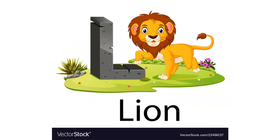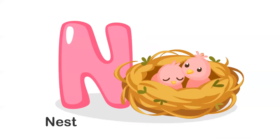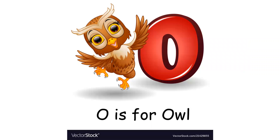Can you guess? Correct! L is for lion. N — N is for nest, N for nest. O — O is for owl.